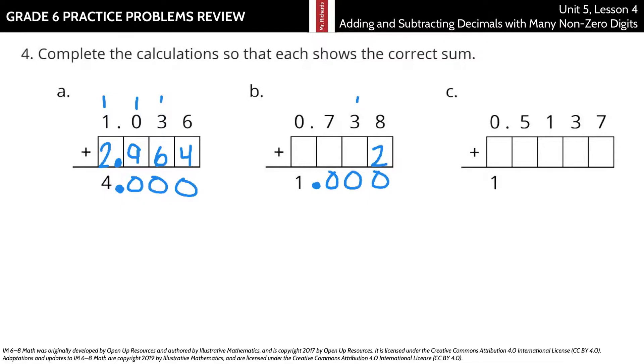So, I can carry a one. One and three already. I need six more to get to ten. One plus seven is eight. I need two more to get to ten. So, 0.262.